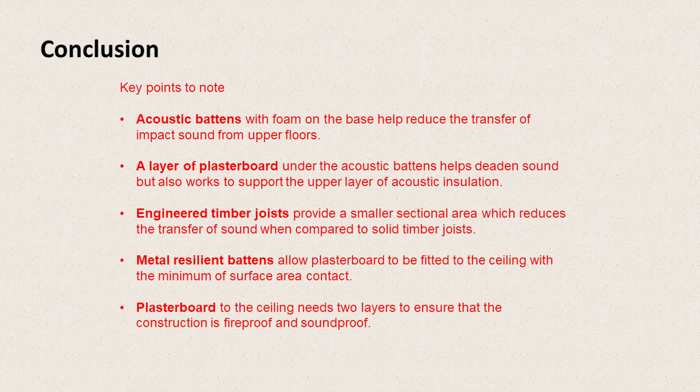In conclusion, a few key points: acoustic battens with foam on the base reduce the transfer of impact sound; a layer of plasterboard under the acoustic battens helps deaden the sound and supports the upper insulation layer; engineered timber joists provide a small sectional area, reducing sound transfer compared to solid timber joists; metal resilient battens on the underside allow the plasterboard ceiling to be fitted with minimum surface area contact; and the ceiling plasterboard needs two layers to ensure the construction is both fireproof and soundproof.